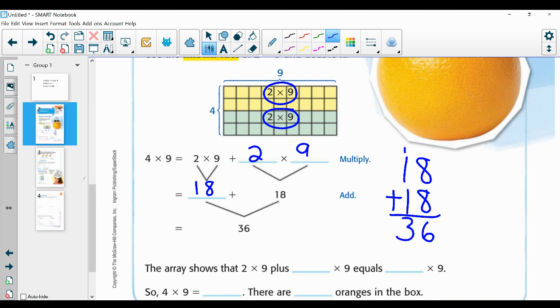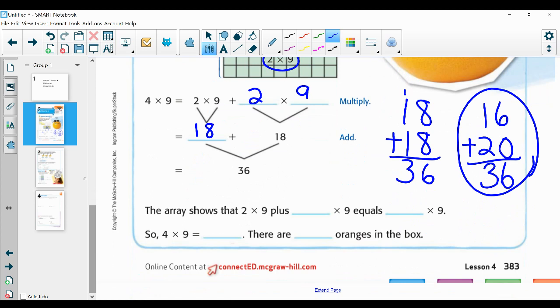Here's another way you can do it. So I know that 8 + 8 is 16, and I know that two tens is 20, so I can add those and I have 36. When I do it in my head, this is how I do it. Okay, so the answer is 36. So the array shows that 2 × 9 plus 2 × 9 equals 4 × 9. So 4 × 9 equals 36, so there are 36 oranges in the box.